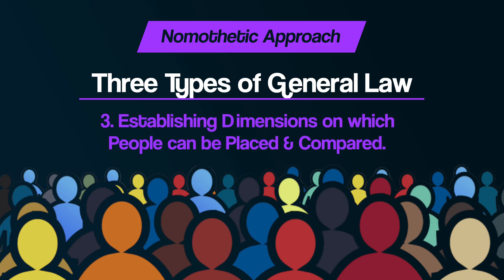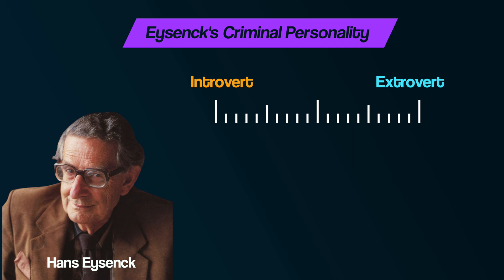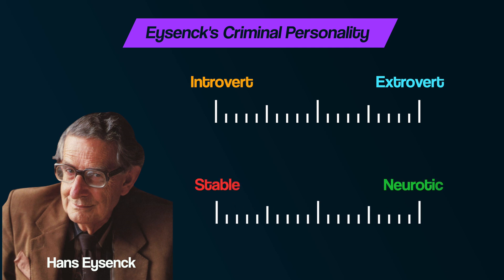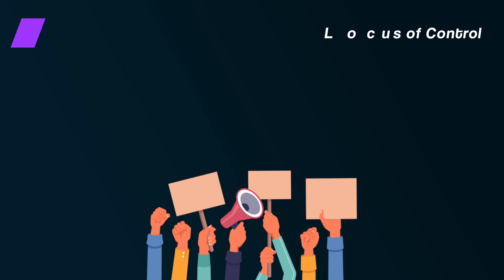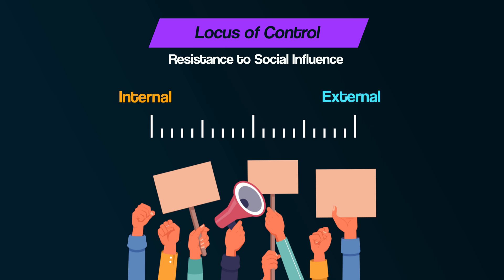Number three: establishing dimensions on which people can be placed and compared. For example, in forensic psychology, Hans Eysenck created the criminal personality, which included the dimensions of introvert/extrovert and neurotic/stable. A general law applied to everyone where if you were high in extroversion, high in neuroticism, and high in psychoticism, you were more likely to be criminal. Another example of dimensions in psychology can be seen in locus of control, with the ends of the dimension being internal or external.